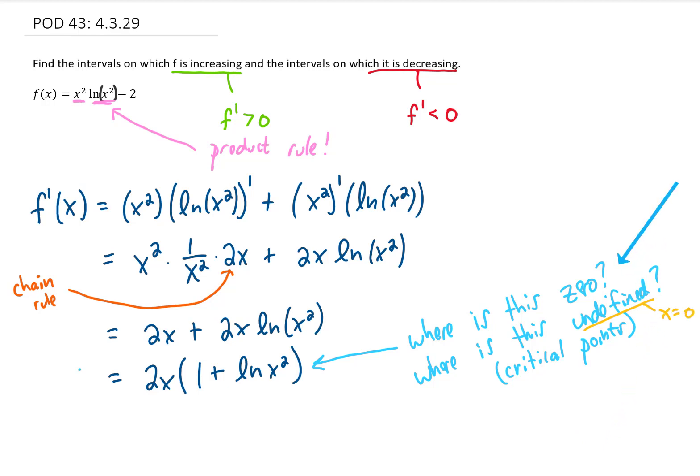To find where this derivative is zero, we can just set it equal to zero, which splits the problem into two pieces. One factor says that 2x equals zero or x equals zero. And the other factor says that 1 plus the natural log of x squared equals zero. This might take a second to solve. Let's move the 1 to the right side of the equation by subtracting.